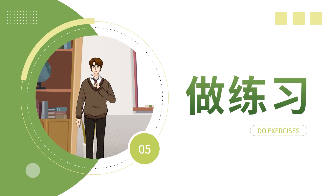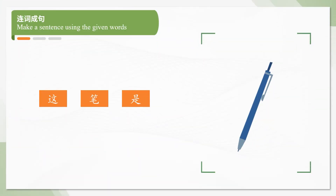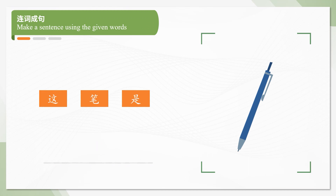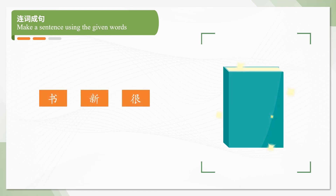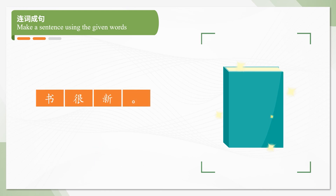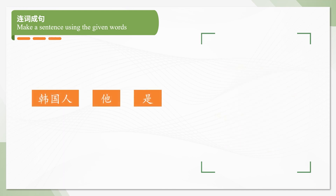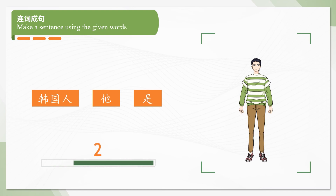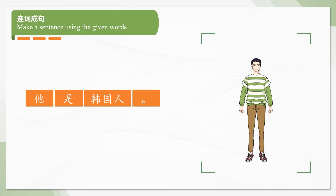Now let's do some exercises. Make a sentence using the given words. 这是笔。书很新。他是韩国人。